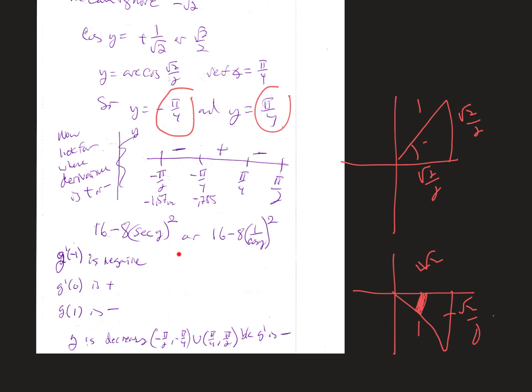So I tested -1 with my calculator: 16 - 8(sec(-1))² came up negative. Then I tested in the next range. Zero is in that range, and I didn't even need to calculate it because cosine of 0 is 1, so 1/1 is 1, squared is 1, times 8 is 8, so 16 - 8 is positive. Then I tested 1 and it was negative. Because the derivative is negative between -π/2 and -π/4 and between π/4 and π/2, that's when it's decreasing.